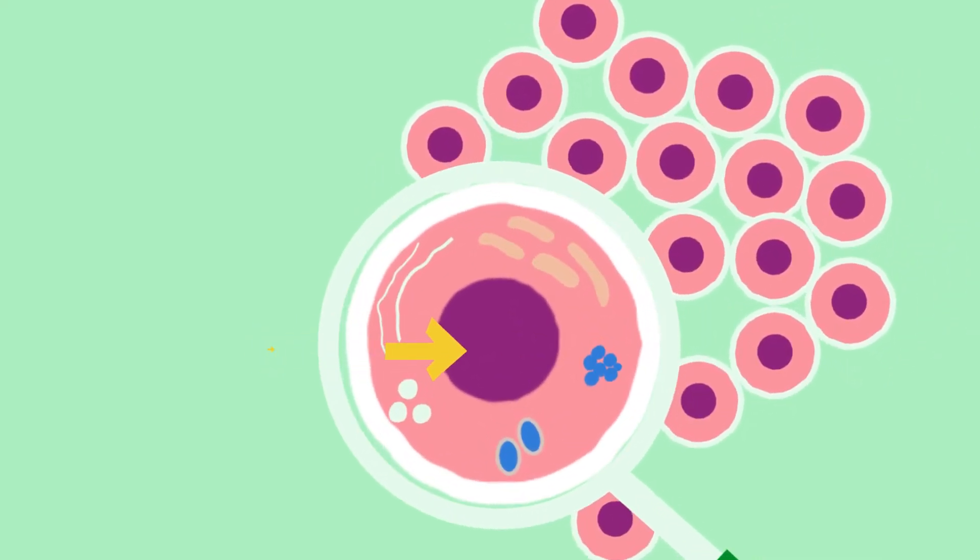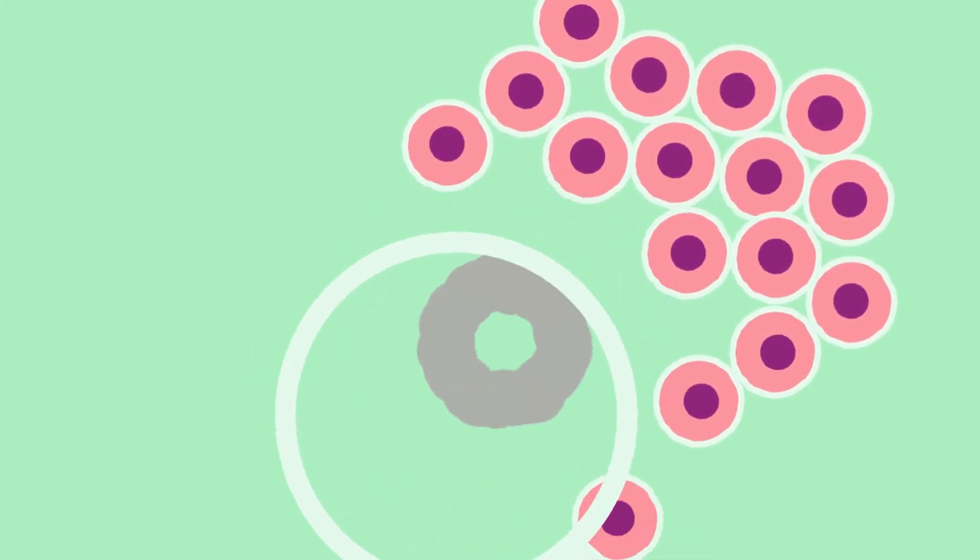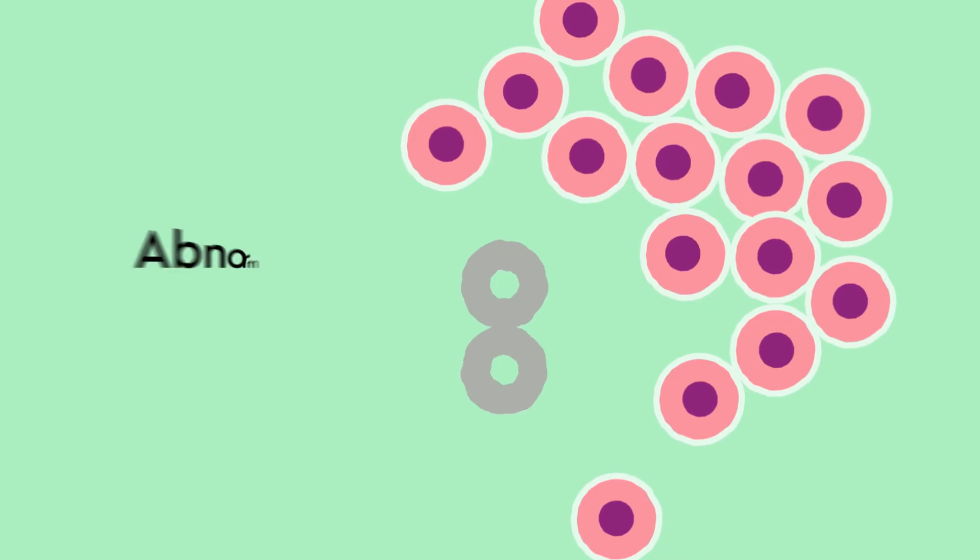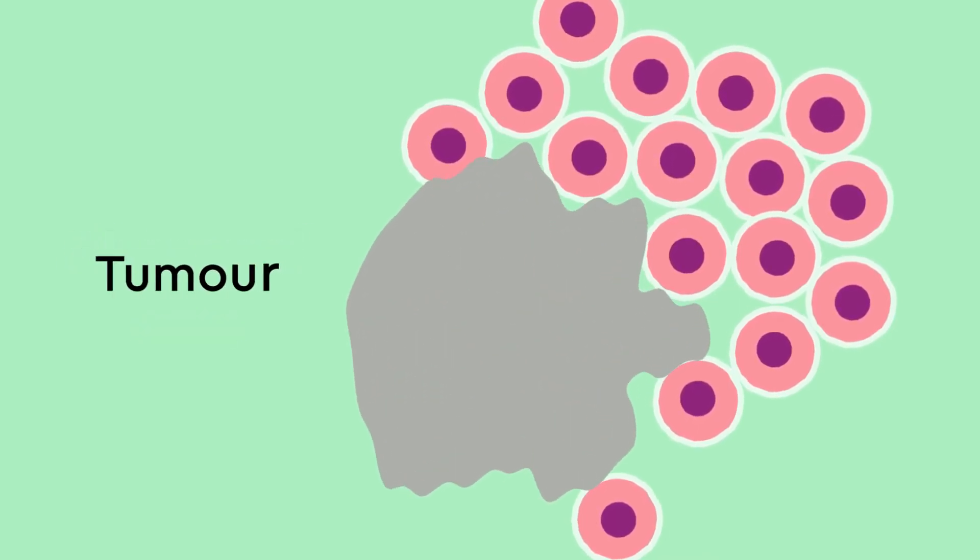Sometimes, the signals go wrong and the cell becomes abnormal. The cells keep dividing and make more abnormal cells. These cells form a lump called a tumour.